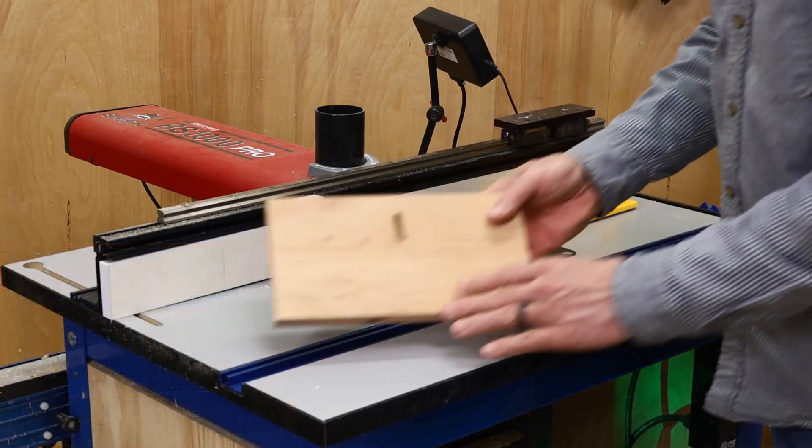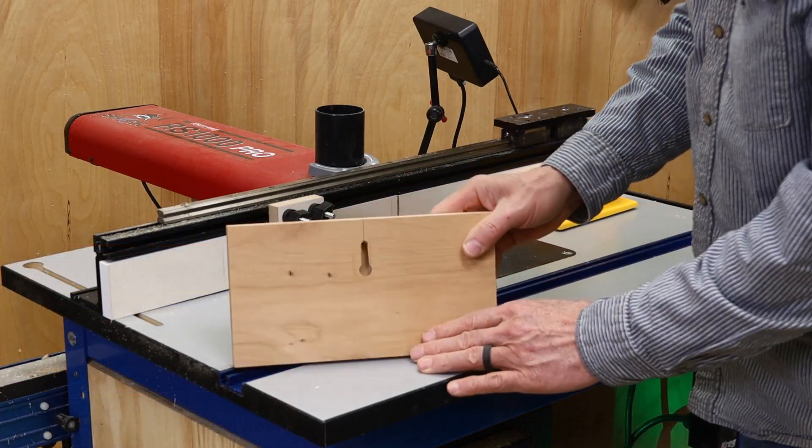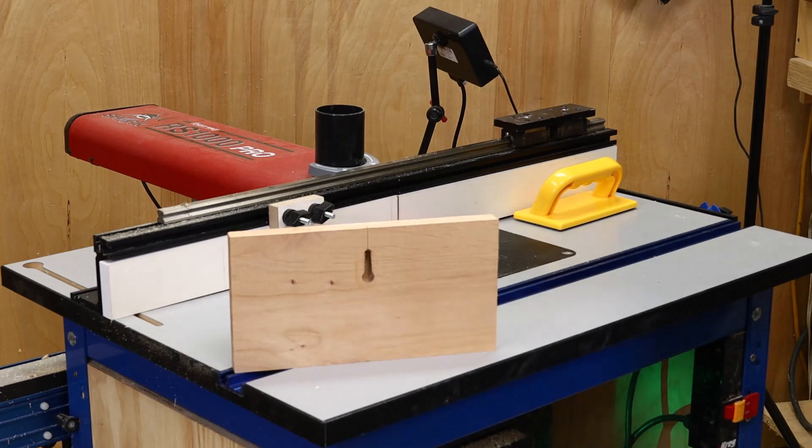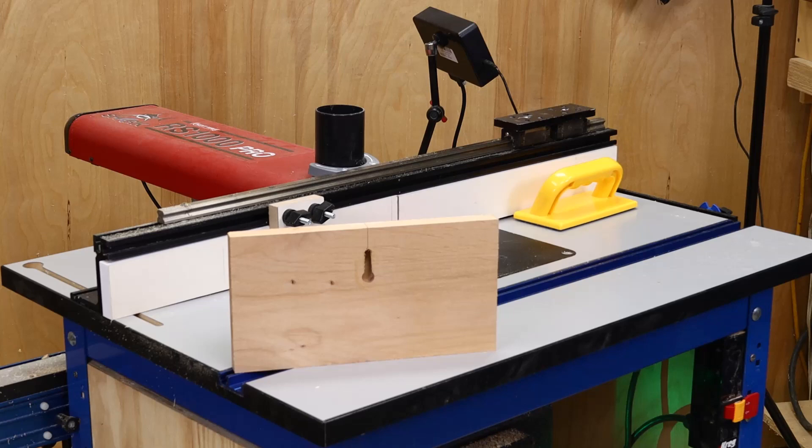However, as you can see, the results are perfect. This really is a simple way to make keyhole slots and easily repeatable. For videos on other RS1000 joinery apps, check out the links in the description below this video.